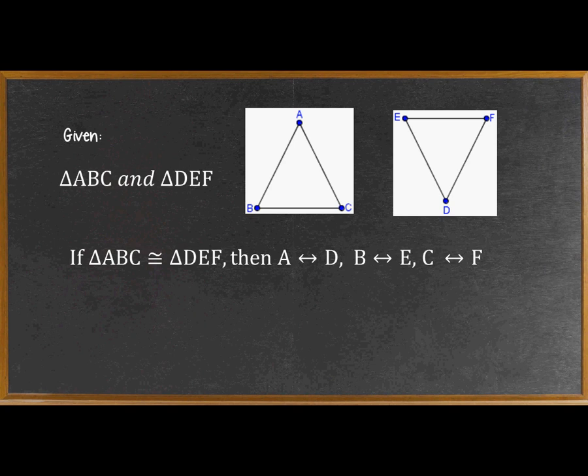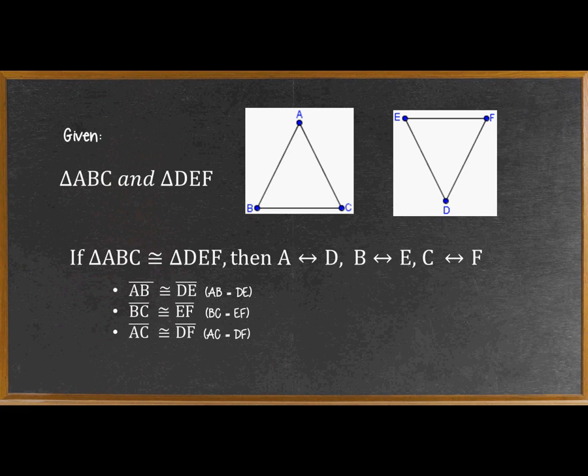That's the order of their arrangement. A corresponds to D, B corresponds to E, and C corresponds to F. Also, side AB is congruent to DE, side BC is congruent to side EF, side AC is congruent to side DF, which means that AB is equal to DE, BC is equal to EF, and AC is equal to DF.